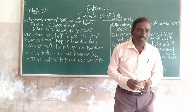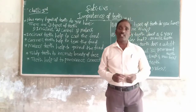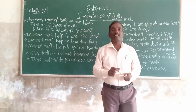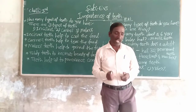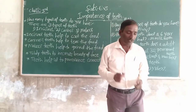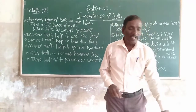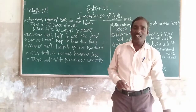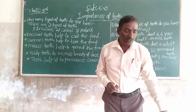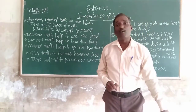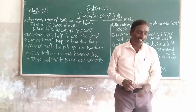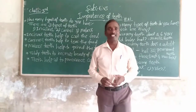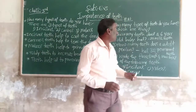These are called permanent teeth. If the permanent teeth fall, they will not grow again, so we have to protect the permanent teeth. An adult person has totally 32 permanent teeth. Among them, 8 are incisor teeth, 4 are canine teeth, and 20 are molar teeth. Small children have totally 20 milk teeth.